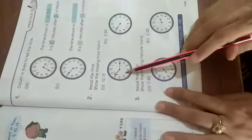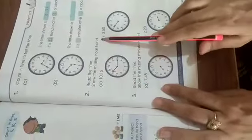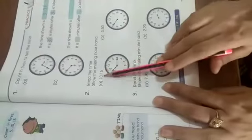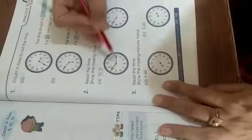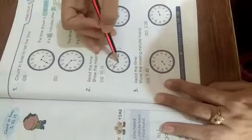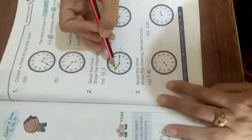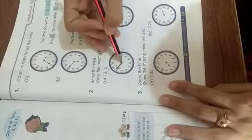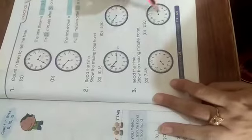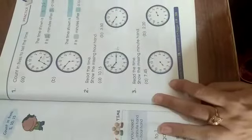Now come to the next question. Read the time, show the missing hour hand. Again, you will show the missing hours. How are they showing you? 3:10, 3:15. See, 15. 3 means here 15 minutes. And where is the 10? So you will show it with the red hour hand here at 10. In this way, you will do B part by yourself, and again, you will do these two parts by yourself. This is your homework.